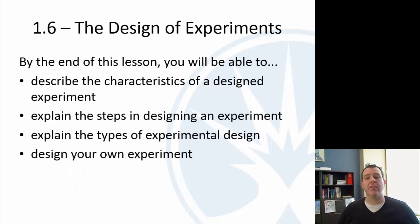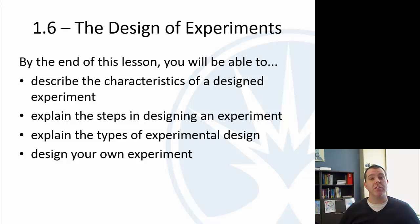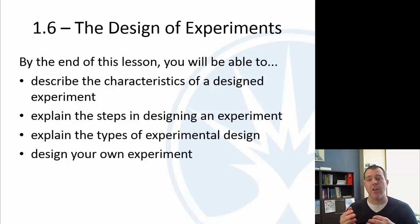The next one is a little more interesting — a lot more reading again, but we're going to talk about designs of experiments. You'll recall back in section 1.2 — I'll put that link above — we talked about observational studies versus designed experiments. If we design an experiment, then we can claim that one thing caused another. So we're going to talk about what are the characteristics of a designed experiment, the steps, and some different types.